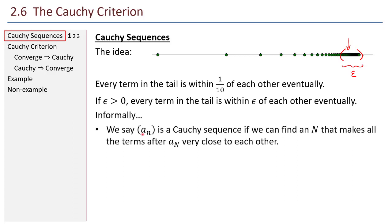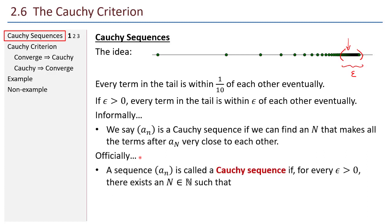Informally, we say that the sequence a sub n is a Cauchy sequence if we can find an index N that makes all the terms after a sub N very close to each other. Here it is officially: a sequence is called a Cauchy sequence if for every epsilon greater than zero, there exists a N such that given any two indices m and n greater than or equal to N, the distance between those two terms — the nth term and the mth term — is less than epsilon.